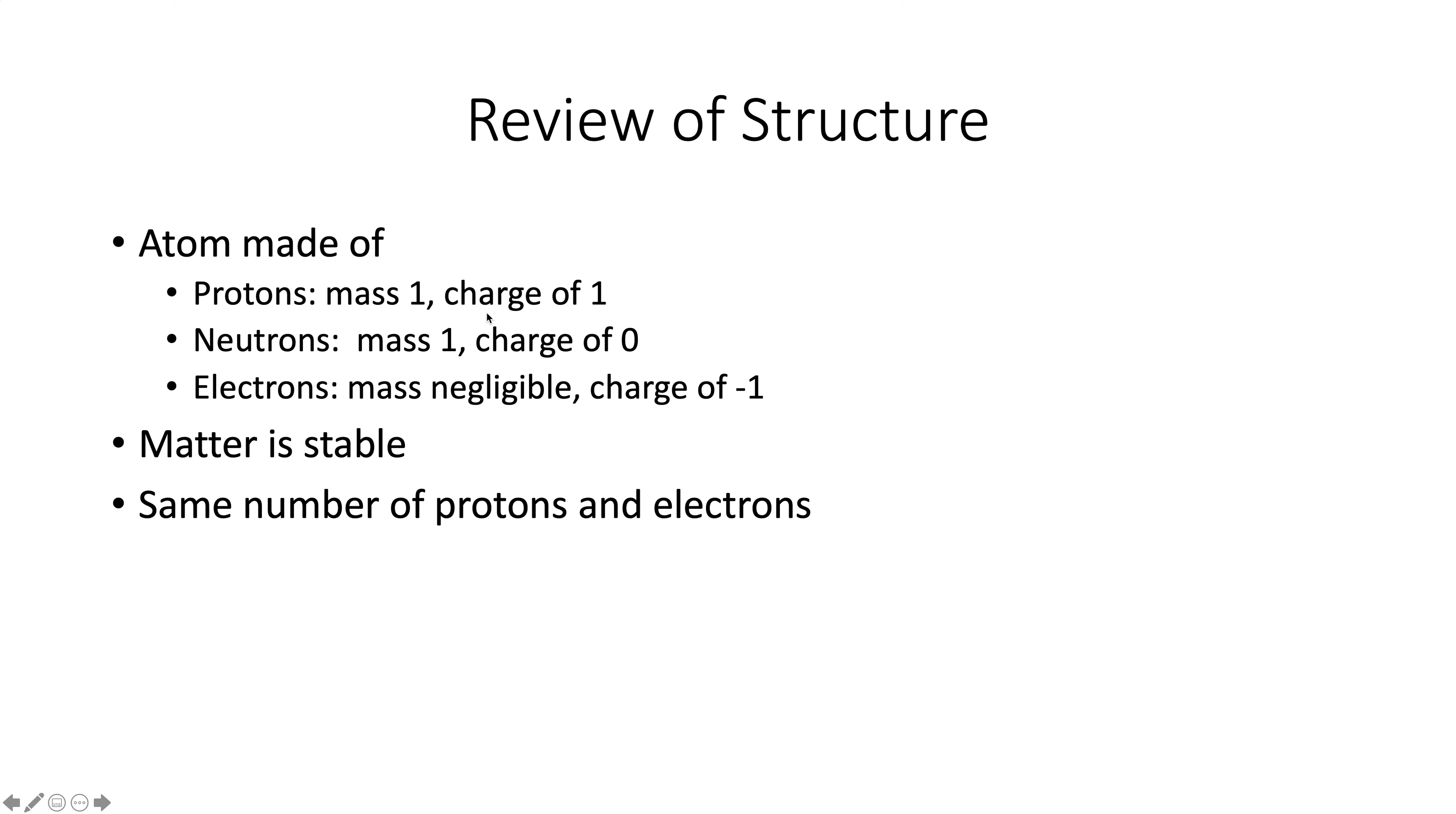Electrons' mass is very small. Protons have a charge of 1, neutrons a charge of 0, electrons have a charge of negative 1. We also know that matter is stable, and that there's the same number of protons and electrons because atoms are uncharged. All right, so this is what we know walking in the door.